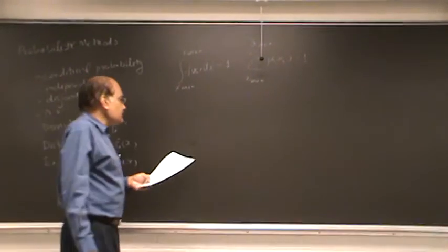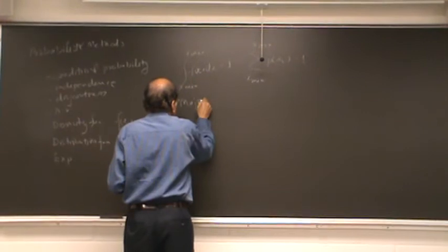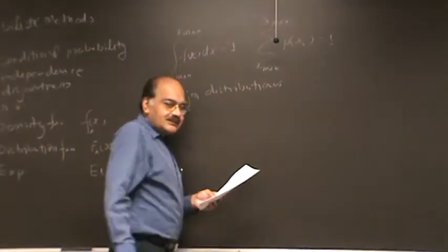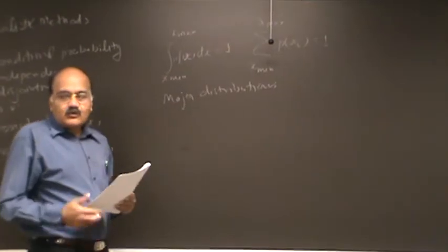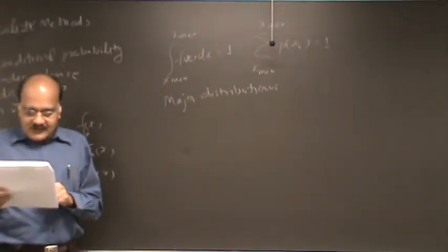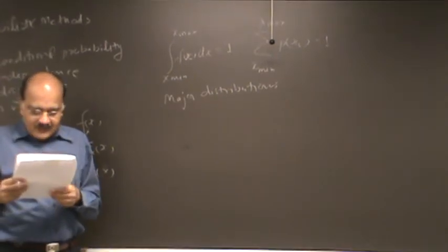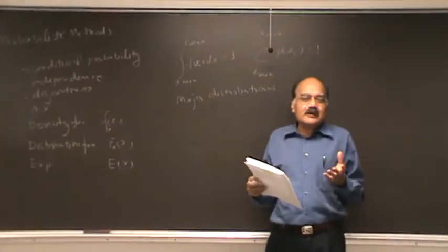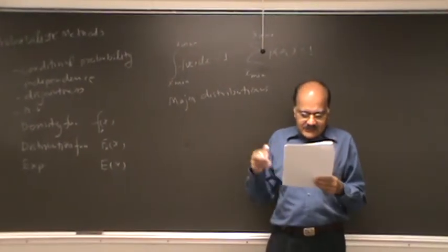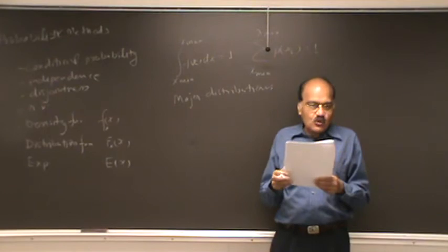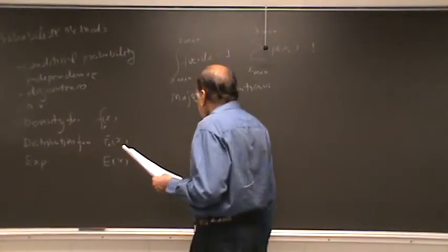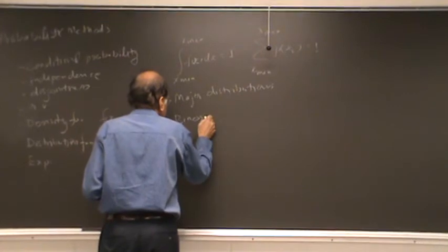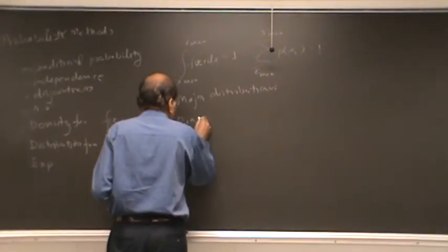Now let us look at some major distributions. And let us start with some discrete ones. So we are going to look at a couple of discrete distributions and a couple of continuous distributions. Now we are going to see basically what we need for our work. And we are not going to go into a whole lot of mathematics, because that stuff you have seen, or it is available somewhere, in case you have forgotten it. So we will start with binomial distribution.